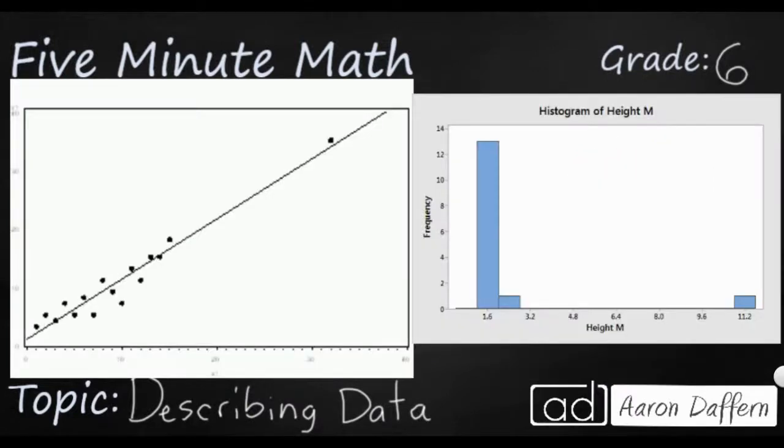So here's two more examples of outliers. You see on the right, this histogram here is your cluster right here. That's where your largest piece of information is near that 1.6, but then you've got this outlier way up here at 11.2. We've also got this line chart and you have most your data right here moving normally, and then you've got that outlier way up there on the right.